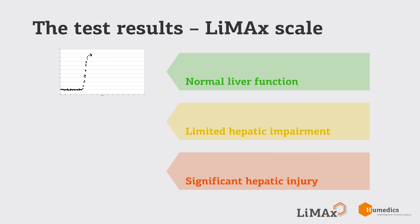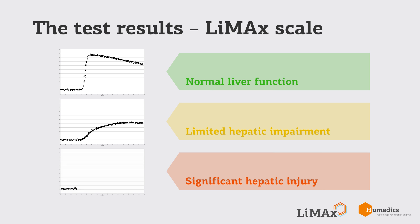A curve that looks like this is observed in a patient with normal liver function. A patient with limited hepatic impairment like liver cirrhosis will show a substantially lower curve. A patient with a substantially compromised liver function, such as liver failure, is likely to show this extremely low and quite flat line.